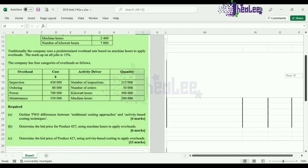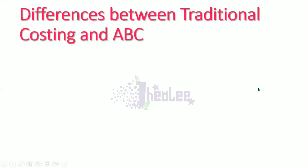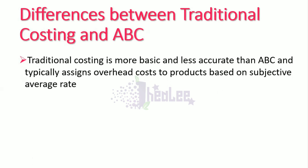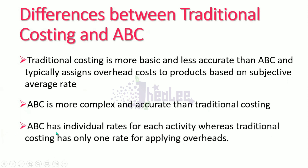You are required to, part A, outline two differences between traditional costing approaches and activity-based costing techniques. The differences are: traditional costing is more basic and less accurate than activity-based costing, and typically assigns overhead costs to products based on a subjective average rate. ABC is more complex and accurate than traditional costing, and has individual rates for each activity, whereas traditional costing has only one rate for applying overheads.